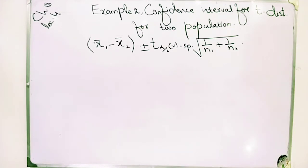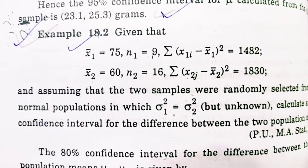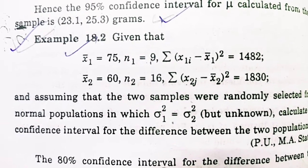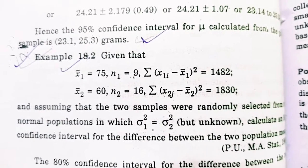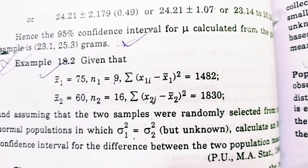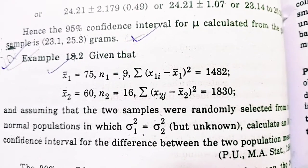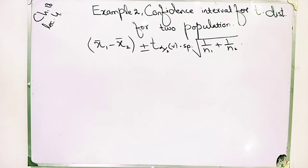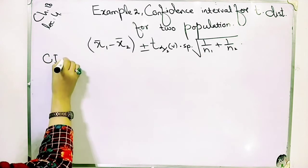This is the formula. Now I show you an example — Example 18.2. Given values: x̄₁, x̄₂, n₁, and n₂ are given, and assuming that the two samples were randomly selected from normal populations in which σ₁² and σ₂² are equal. Calculate the confidence interval for the difference between the two populations. Each and every value is given and you have to calculate the 80% confidence interval.